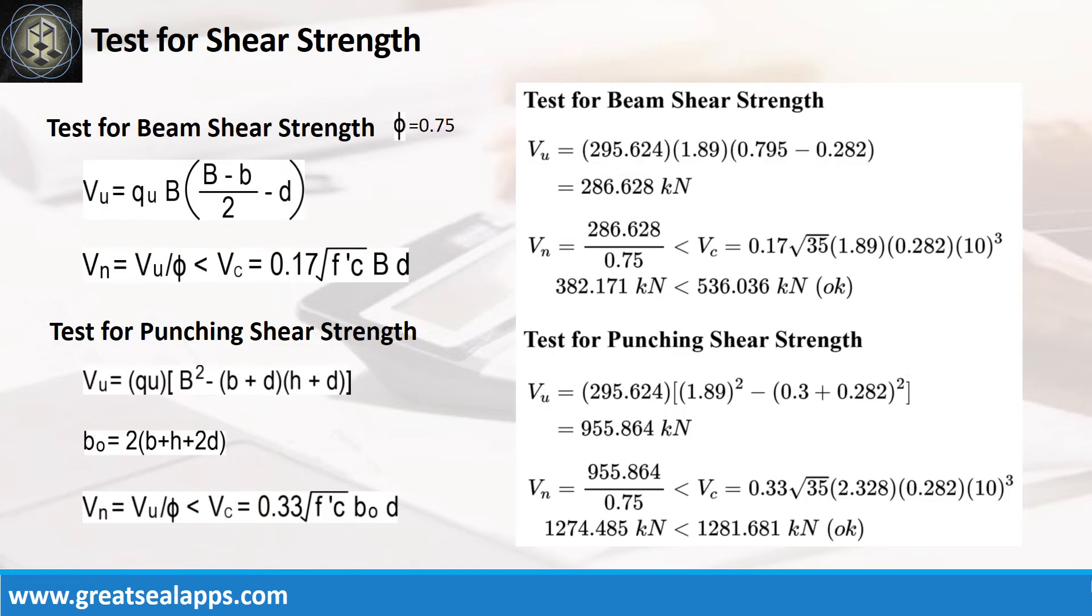The factored beam shear force is 286.628 kN. The nominal force is 382.171 kN less than 536.036 kN concrete capacity. The factored punching shear force is 955.864 kN.